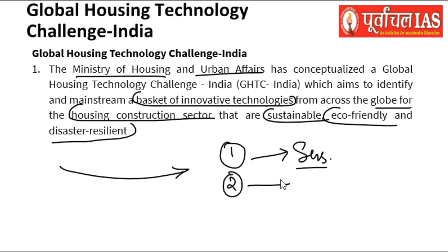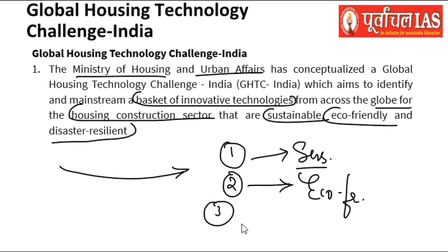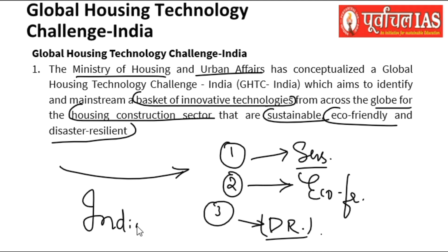Abhi houses ko kya hone ki zaroorat hai? Number one — sustainable hone chahiye, kyunki bahut saare cases dekh rahe hain jahan par ghar gir ja rahe hain. Eco-friendly hona chahiye — hum kaafi strong banate hain par eco-friendly house nahi ban paate. Toh kya hum kar sakte hain ki strong bhi ho, eco-friendly bhi ho? Disaster resilient bhi ho — yeh kaafi zyada zaroori hai kyunki cyclones and various other disasters have been occurring, aur India will be one of the worst affected because of climate change.